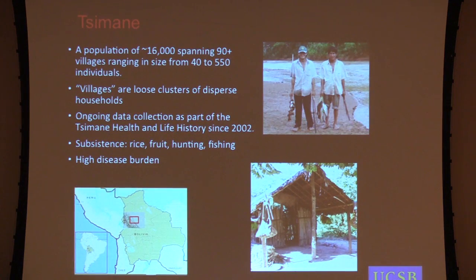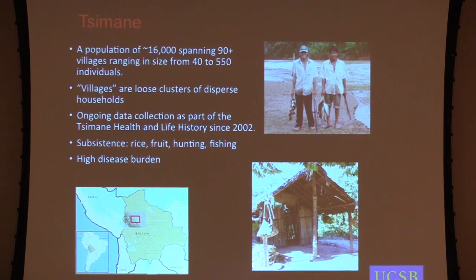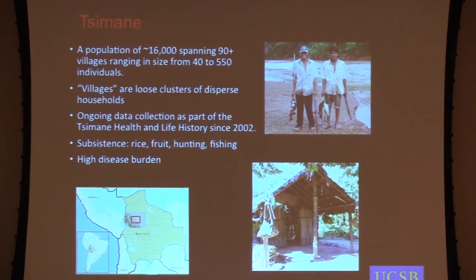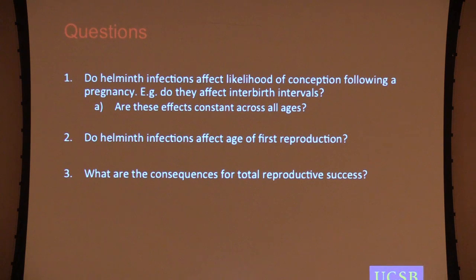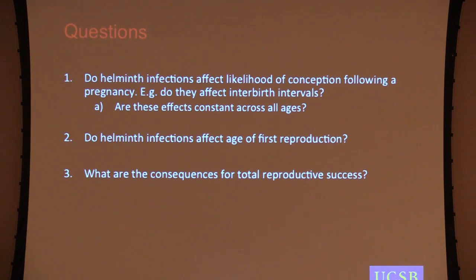This is a study done with the Tsimane, who are forager-horticulturalists in the Bolivian Amazon. They are largely a natural fertility population with a total fertility rate of about nine children per woman. Helminths are very common — about 70% of individuals are infected at any given time. In this population, I'm going to operationalize this by looking at whether helminth infections affect the likelihood of conception following a pregnancy — that is, do they lengthen or shorten interbirth intervals? And do we see this effect across all ages, to check for a shifting effect? Do they affect age of first reproduction?